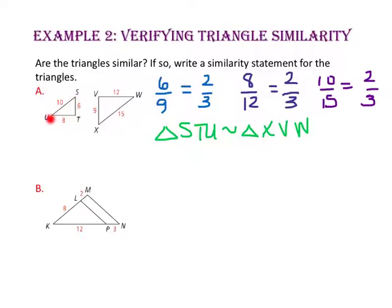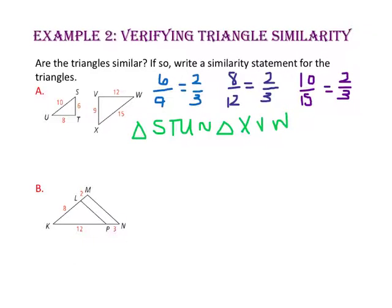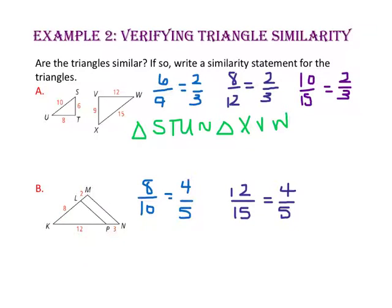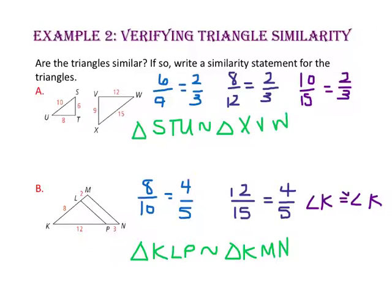Be sure to write your triangles in corresponding order. For part B, let's look at triangle KLP and triangle KMN. Let's compare the left side of each triangle: 8 to 8 plus 2, or 10. Now let's compare the bottom sides: 12 and 12 plus 3, or 15. Since angle K is part of both triangles, it is congruent to itself by the reflexive property. So by the side-angle-side similarity theorem, our two triangles are similar — triangle KLP is similar to triangle KMN — because two sides are proportional and the included angle is congruent.